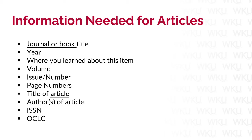You'll need the title of the article, which is the name of the specific article you want. You'll also need the author or authors of an article; if there are multiple authors, you should list them all. You could also include an ISSN number, which is an international standard serial number — an eight-digit number used to uniquely identify a serial publication or journal. An OCLC number is a unique control number used for every record in WorldCat, which is a massive online catalog used by all libraries. If you are unsure of or cannot find some of this information, leave that field blank.